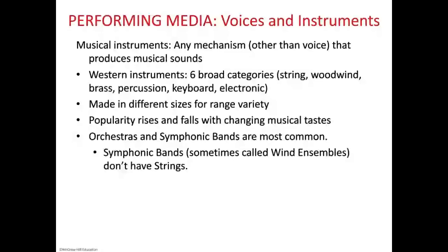We're back — sorry about that, our internet's been a bit spotty this week from the storms. I am recording this so you'll be able to go back and watch it later. Our Western instruments fall into six broad categories: string instruments, woodwind instruments, brass instruments, percussion, keyboard instruments, and electronic instruments. I also think we can divide electronic instruments into analog and digital, with the digital side including computers, samplers, and all the stuff used to make popular music today.